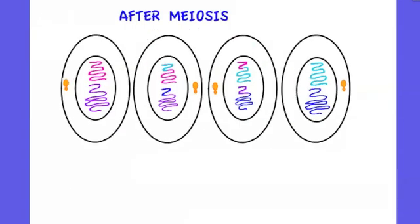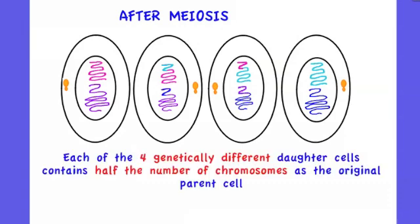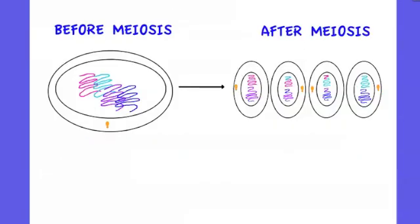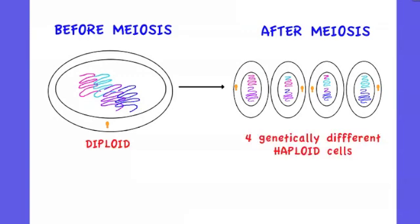Each of these four cells is genetically different from the original cell and has half the number of chromosomes. We refer to the original cell as diploid (2n), and the four cells produced are haploid (n).